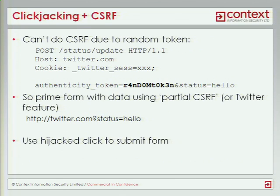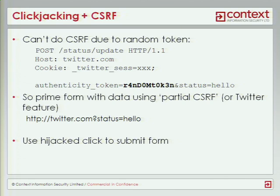So to make clickjacking more powerful, current attacks use clickjacking with cross-site request forgery. This request on the page is what happens when you submit, when you update your status on Twitter. In this line at the bottom, we have the random token and we have the status. If that random token isn't there, then the update won't happen. So for a clickjacking attack to be successful, we need to get some data into a particular form. Twitter makes that easy because we can have a link that includes the status — so in this example, it's 'hello'. If we open up that link...